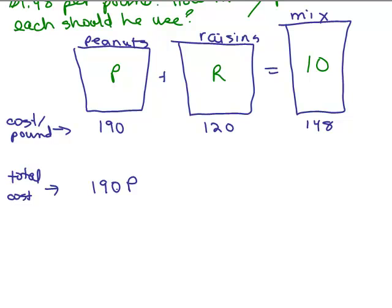How about the raisins? How much would that cost? Well, I've got R pounds of raisins. It's 120 cents per pound, so that would cost 120R.